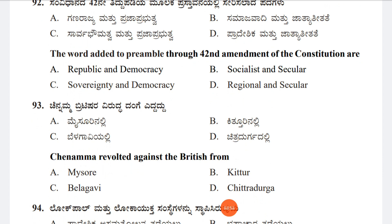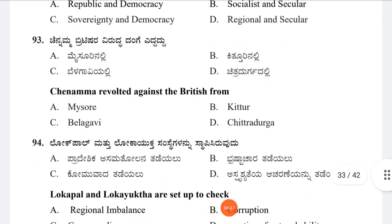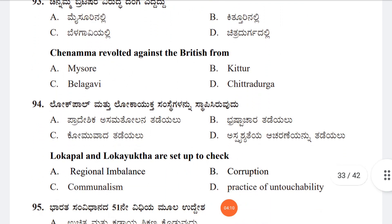Question 93: Rani Channamma revolted against the British from Option A: Mysore, Option B: Kittur, Option C: Belgavi, Option D: Chitradurga. The correct answer is Option B, Kittur.